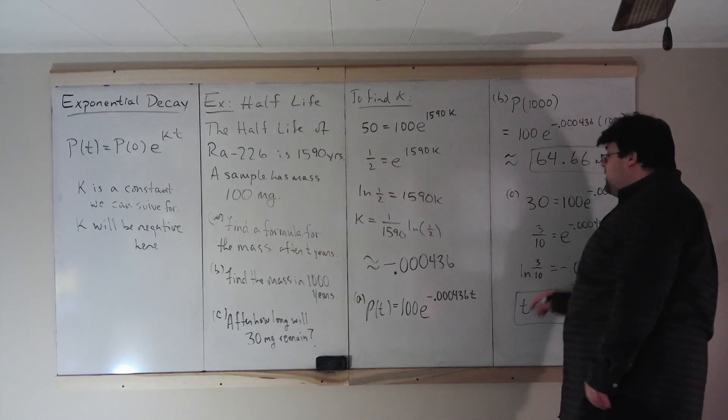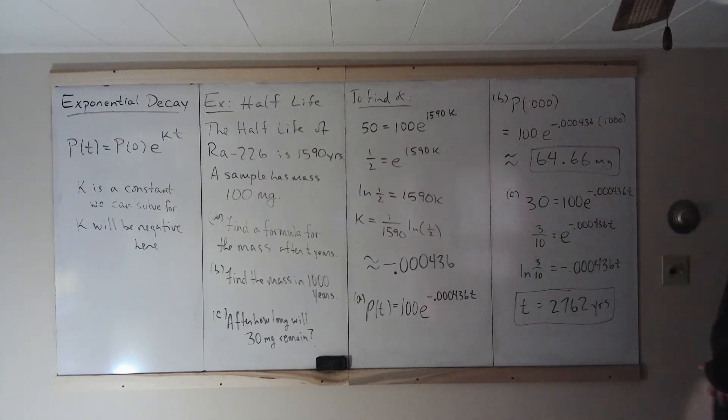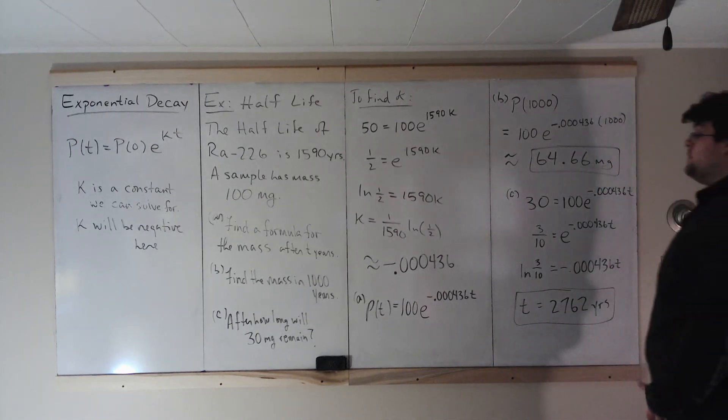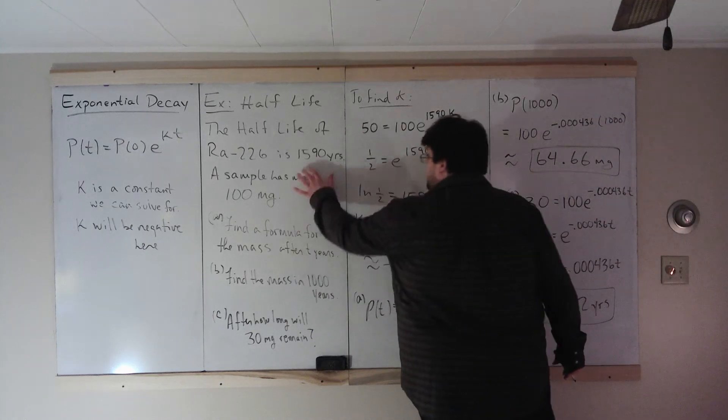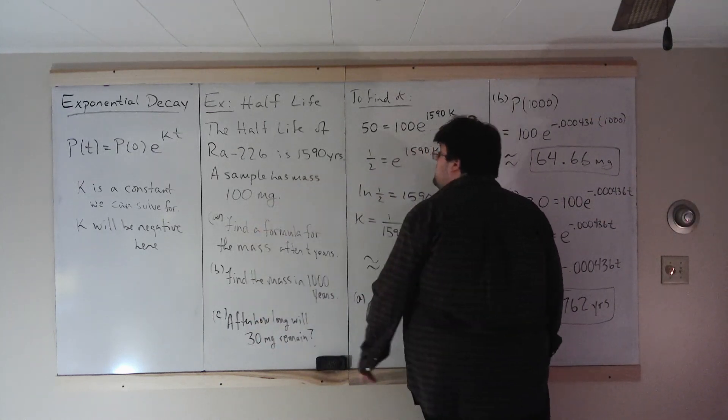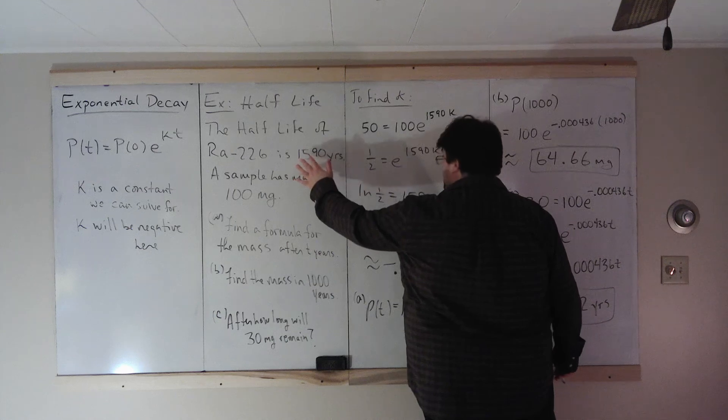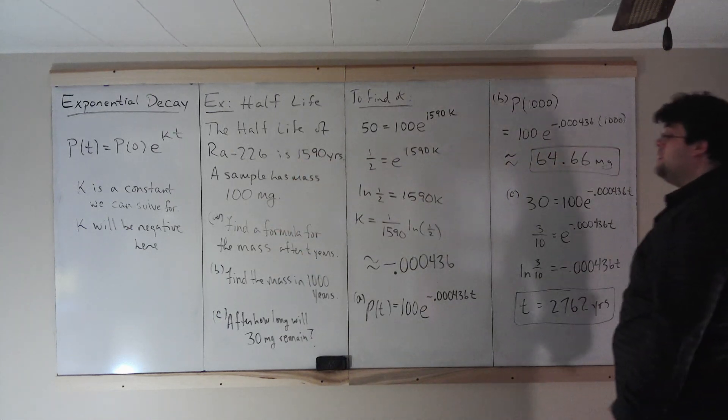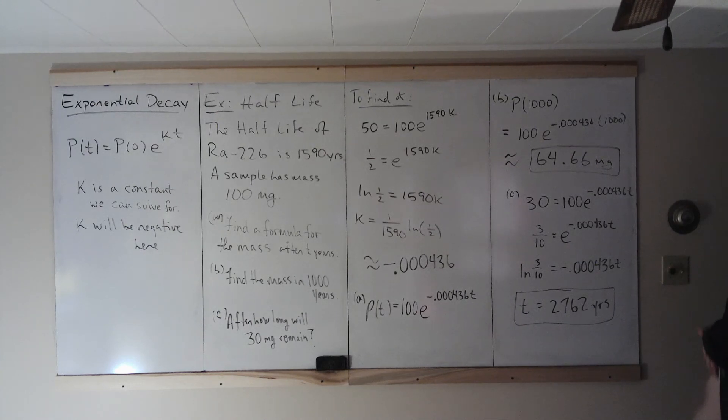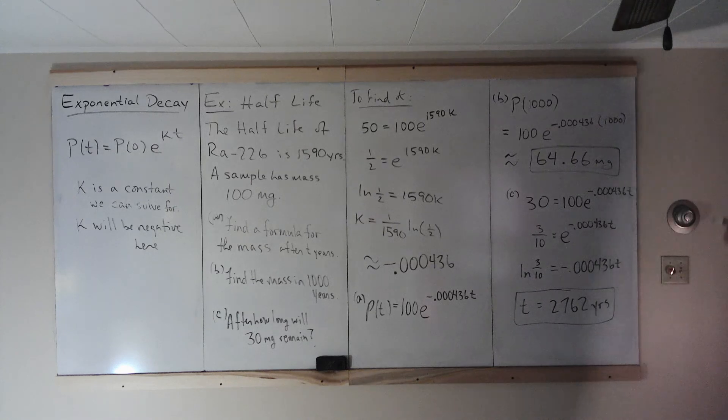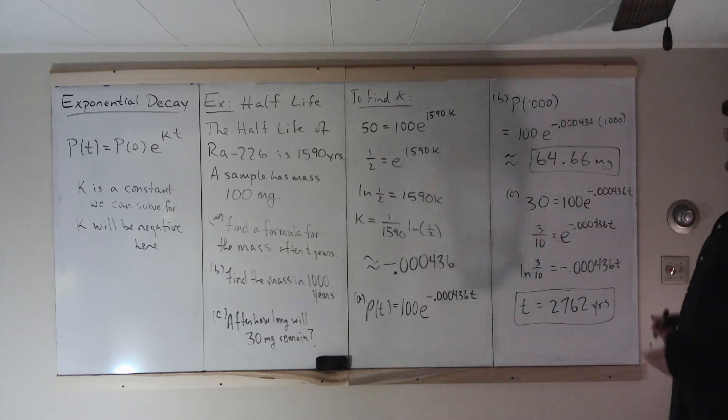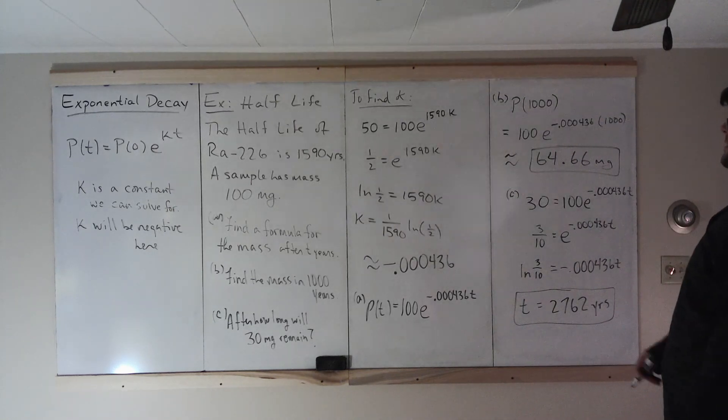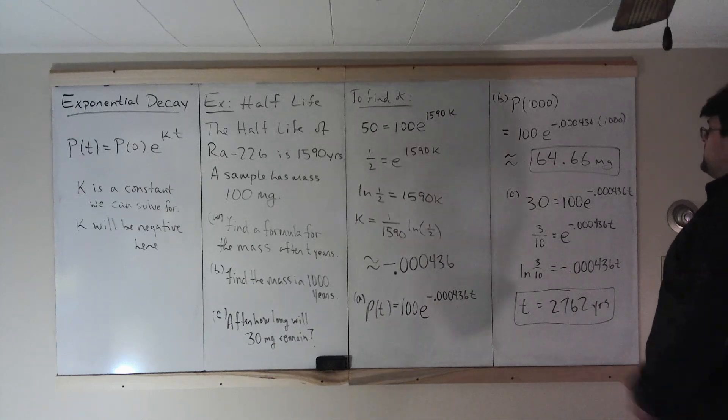Just like in part B, this answer for part C does make sense because in 1590, 50 remains. In 3,180 years, 25 milligrams remain. So 30 should be between 1,590 years and 3,180 years. And we got 2,762 years. Let's look at another kind of exponential decay which is a little more complicated than this one.